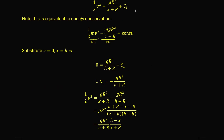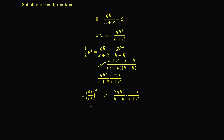Substituting c₁ back into our result of integration, we have ½v² = gr²/(x + r) minus gr²/(h + r). Rearranging the right-hand side gives gr²/(h + r) times (h − x)/(x + r). Now we have a first-order differential equation: (dx/dt)² = v² = 2gr²/(h + r) — which is just a big constant — times (h − x)/(x + r).